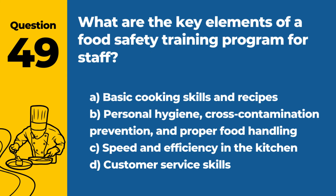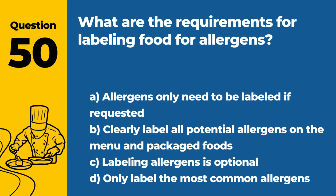Question 49. What are the key elements of a food safety training program for staff? a. Basic cooking skills and recipes. b. Personal hygiene, cross-contamination prevention, and proper food handling. c. Speed and efficiency in the kitchen. d. Customer service skills. Answer b. Personal hygiene, cross-contamination prevention, and proper food handling. A food safety training program for staff should focus on key elements such as personal hygiene, prevention of cross-contamination, and proper food handling techniques.